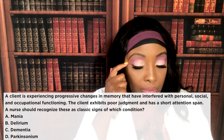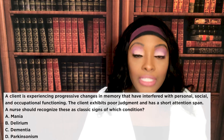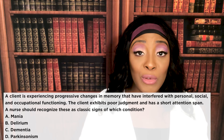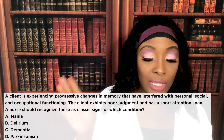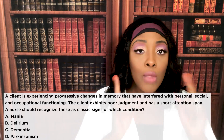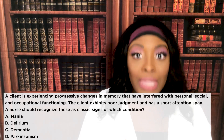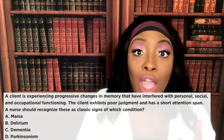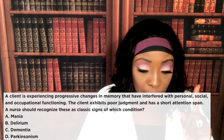The correct answer is C — dementia. The hints in the question: number one, it says progressive changes — dementia is progressive, meaning as time goes on it gets worse, there is no reversing it. That's our first clue. Then it says it has interfered with personal, social, and occupational functioning — they are no longer able to function the way they used to because cognitively they are deteriorating. Third, poor judgment and short attention span — classic dementia.